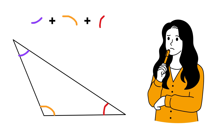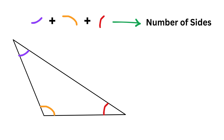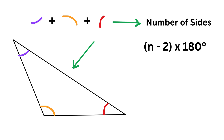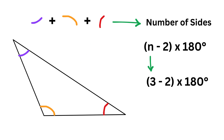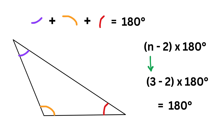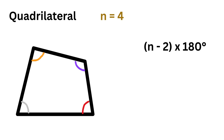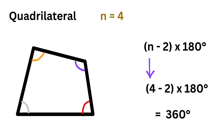The sum of all interior angles in a polygon depends on how many sides it has. If the number of sides is n, the sum of interior angles is given by the formula (n − 2) × 180 degrees. For a triangle, n = 3, giving (3 − 2) × 180 = 180 degrees, so interior angles of any triangle always add up to 180 degrees. A quadrilateral has n = 4, giving 360 degrees, so its interior angles always add up to 360 degrees.